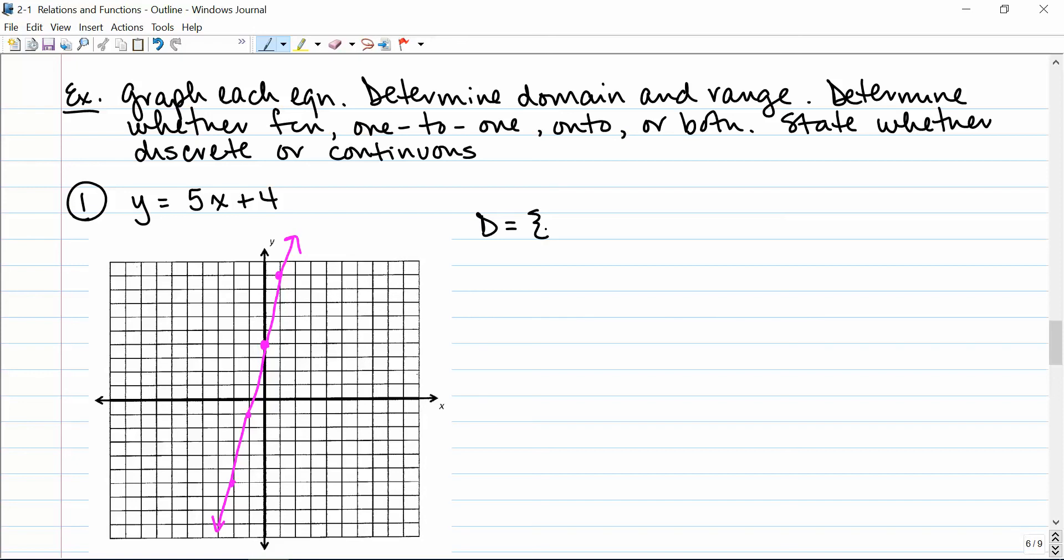Its domain, as is the domain of all non-vertical lines, is all real numbers. And its range, as is for all non-vertical lines, also all real numbers. This function is actually both one-to-one and onto. And this is going to be a continuous function.